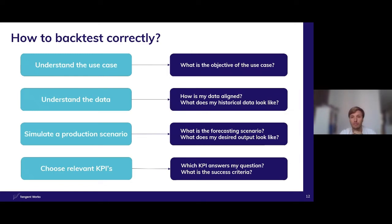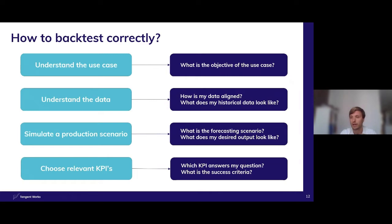A third point is to simulate a production scenario as closely as possible, because there are different levels to backtesting. You can do a high-level backtest and take a quick look at the predictive value in a dataset. But the best way to answer your question is to get as close to a production scenario as possible — describing your setup properly: what are your forecasting horizons, what is your rolling window? Getting as close to a production scenario as possible while backtesting will give you a clearer answer on the quality of your predictions.